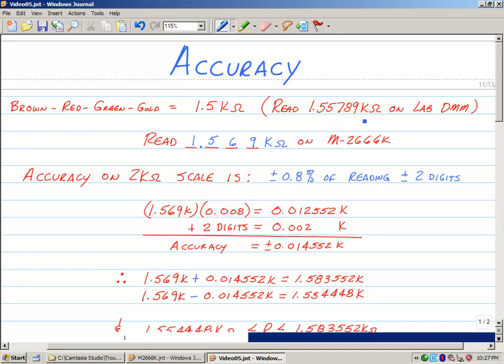I also read it on our M-2666R digital multimeter and I got 1.569k. They're very similar but not exactly the same. On this scale it says that it has an accuracy of plus or minus 0.8 percent of the reading plus or minus two digits.